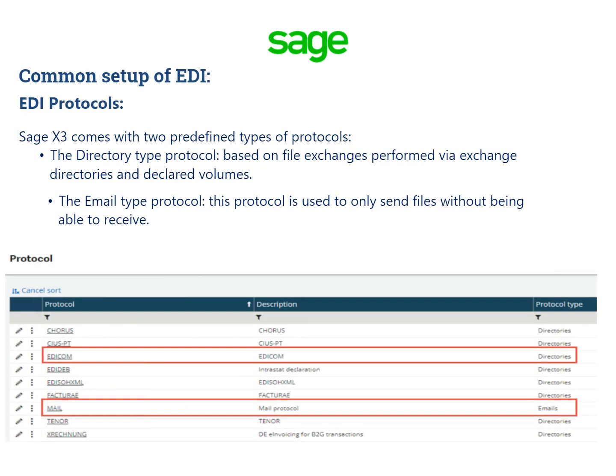EDI protocols: SAGE X3 comes with two predefined types of protocols. The directory type protocol, which is based on file exchanges performed via exchange directories and declared volumes. The email type protocol, which is used to only send files without being able to receive.